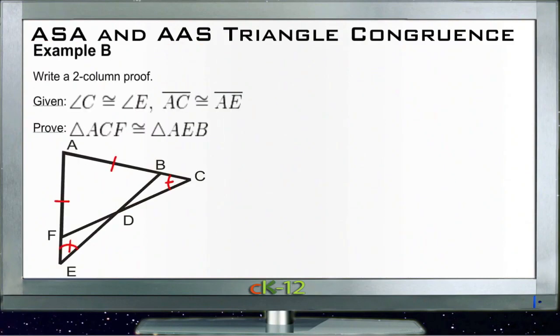Okay, let's take a look at example B. Example B asks us to write a two-column proof. It tells us that angle C is congruent with angle E. So we have C here and E down here, and they're congruent. And it tells us that side AC is congruent with side AE. So our side up here on the top is congruent with the side down the left-hand edge over here. Okay, and then we need to prove that triangle ACF is congruent with triangle AEB.